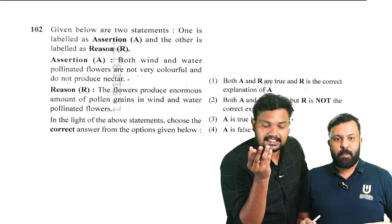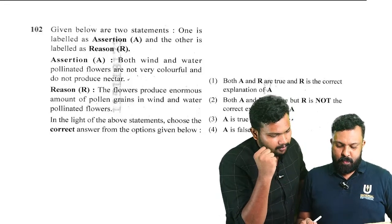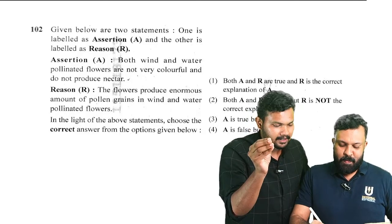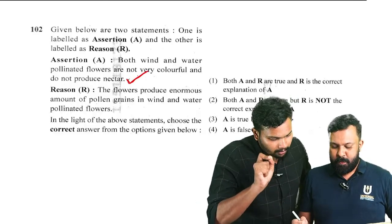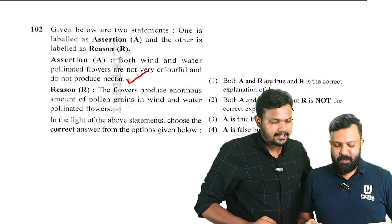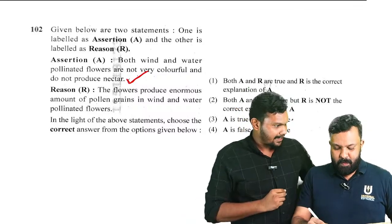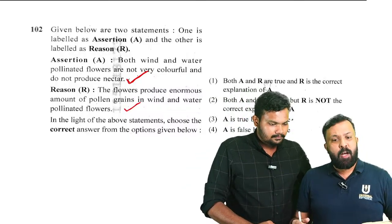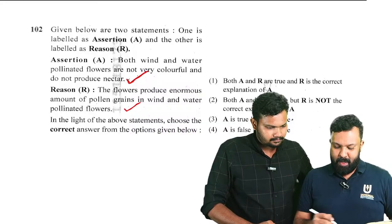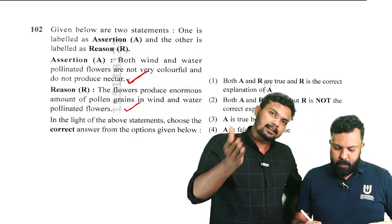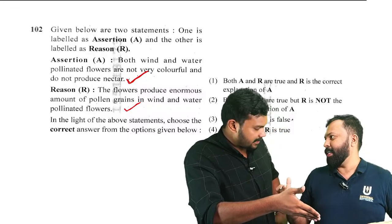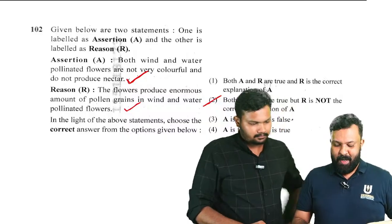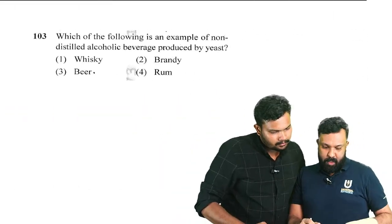Regarding sexually reproducing flowering plants: both wind and water pollinated flowers are not very colorful and do not produce nectar — the assertion is correct. The reason: flowers produce enormous amounts of pollen grains in wind and water pollinated flowers. This is to compensate for the loss of pollen grains — so the reason is correct but it is not the correct explanation of the assertion. Option two is the answer.